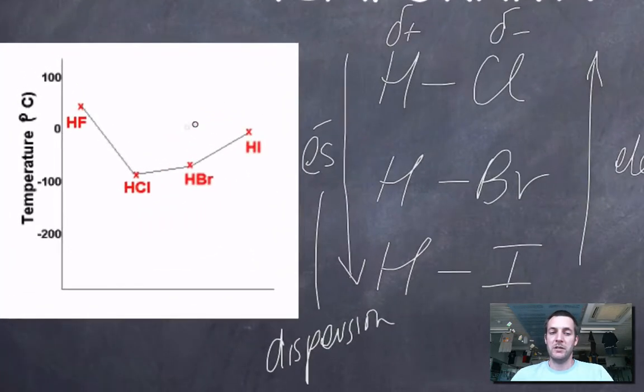As we can see from this chart of boiling points, although it doesn't say it's a boiling point graph, if we look at the boiling points of these four substances what we can see is that hydrogen iodide has the highest boiling point of all three.